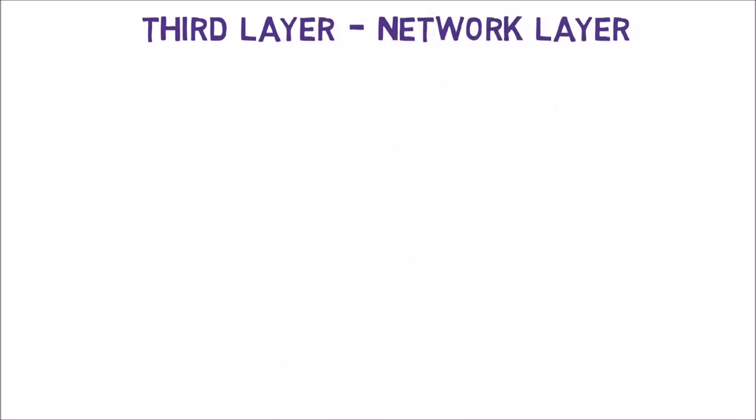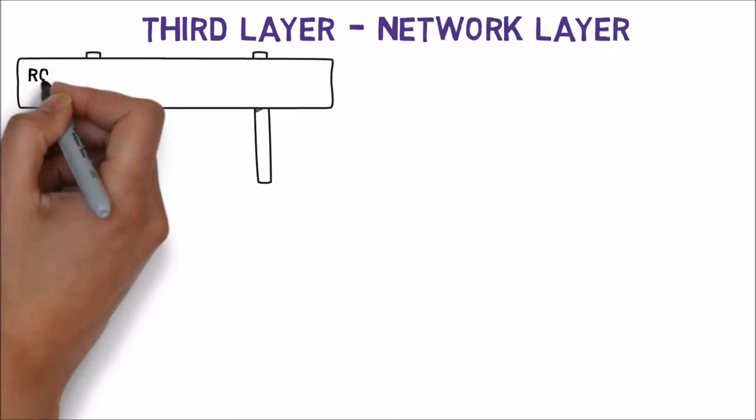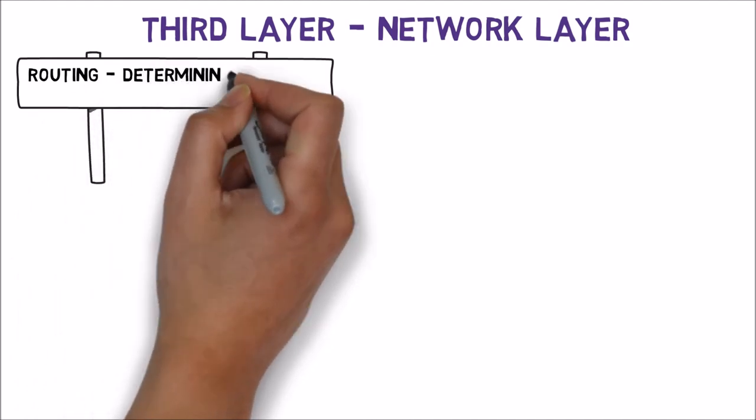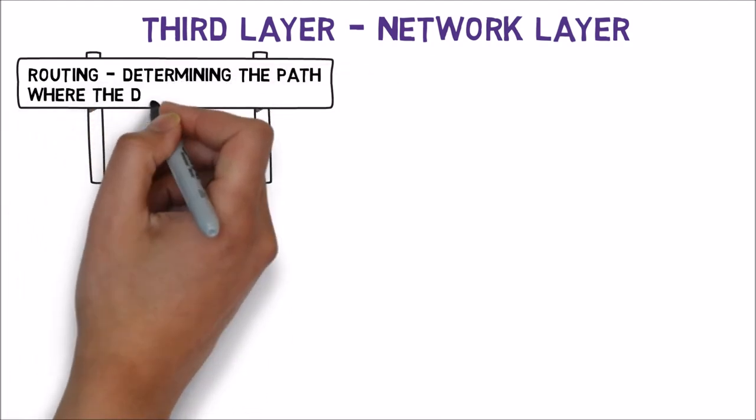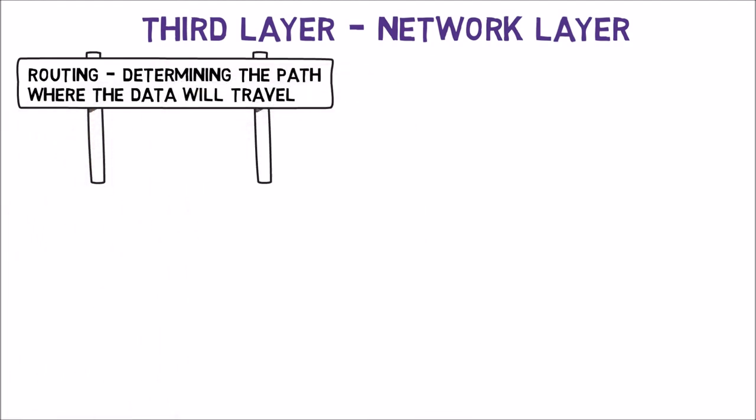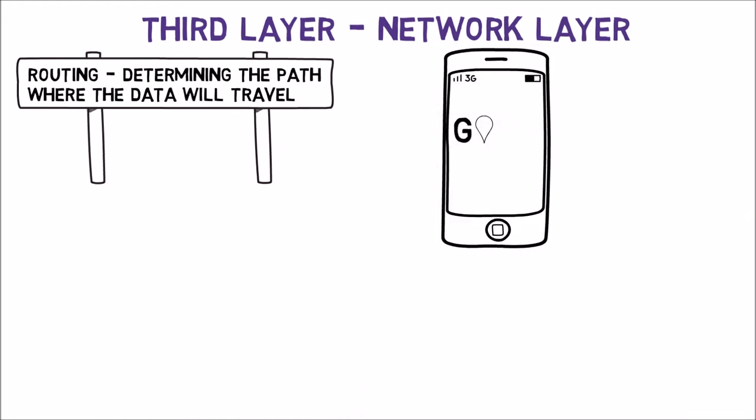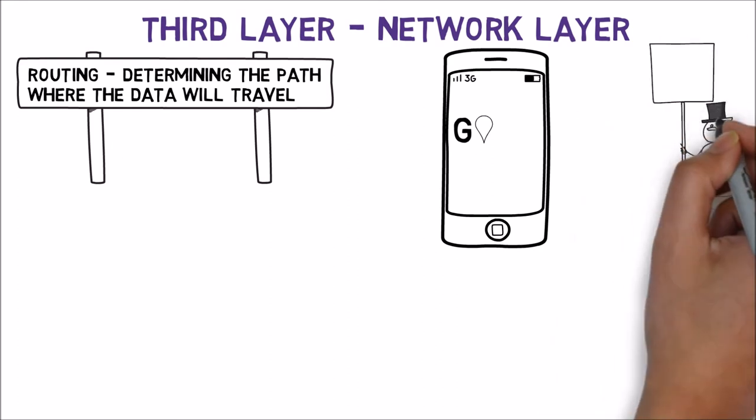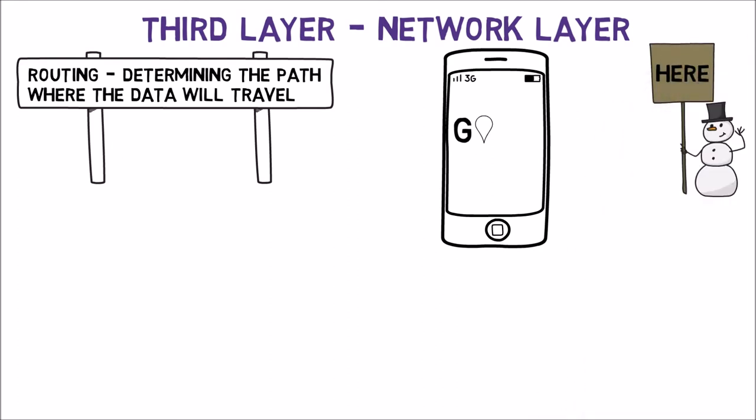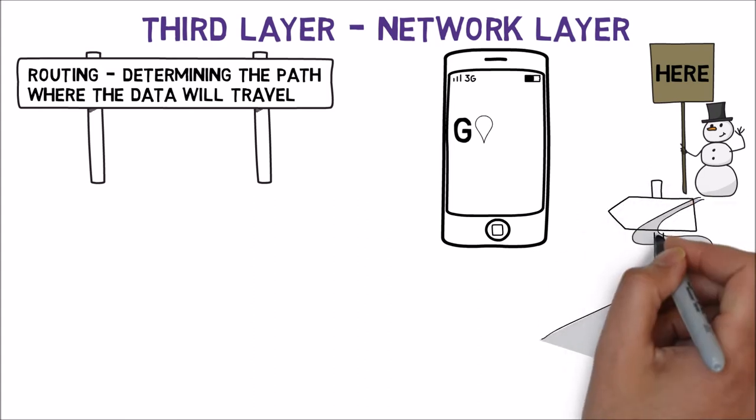Let's move on to the next layer. The third layer is the network layer. This layer is responsible for routing, that is, determining the path where the data will travel. We can think of this layer as the successful routing app, Google Maps. When we get in the car and use Google Maps, we tell the app our destination, and Google Maps finds out the best route for us to drive in. Notice that Google Maps is dynamic. It won't necessarily pick the same route each time. Sometimes one path will have a traffic jam, so Google Maps will prefer another route.